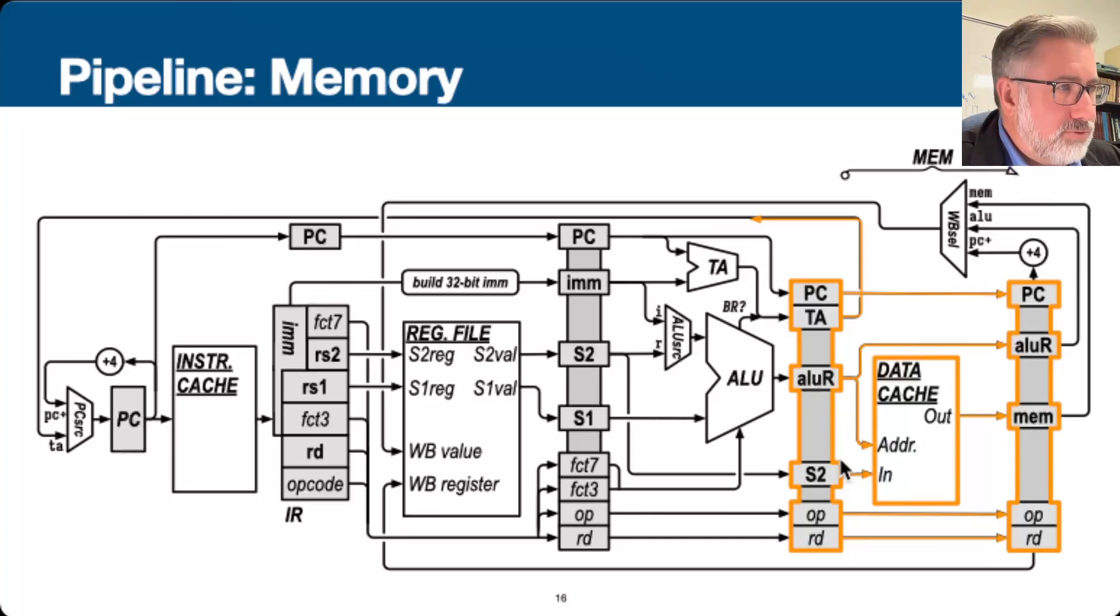So either we use the address, we use the ALU result, the ALU result as an address, or we pass it along. And in fact, both of these things happen. We use it as an address. We access the data cache, should the control logic tell us to, either for storing or for loading. Either we store S2 in the data cache, or we load some new value out of the data cache. Regardless, we also pass along the ALU result.